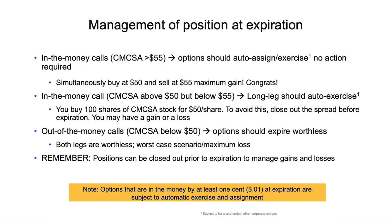This means you will simultaneously buy shares at $50 and sell shares at $55. Under this situation, you don't need to have the money in your account to buy those shares at $50 — $5,000 worth — because you're going to simultaneously buy at $50 and sell at $55. The difference between those two is the spread, and you're going to have your maximum gain. Your profit is not going to be $5 a share or $500 — it's $500 minus what you paid for the spread. But regardless, congratulations: that is the maximum profit the spread could produce for you.